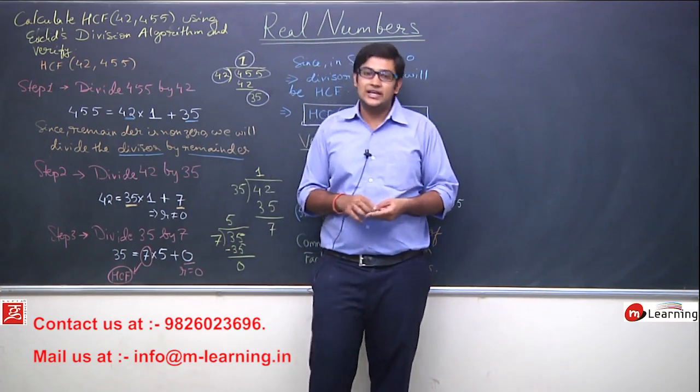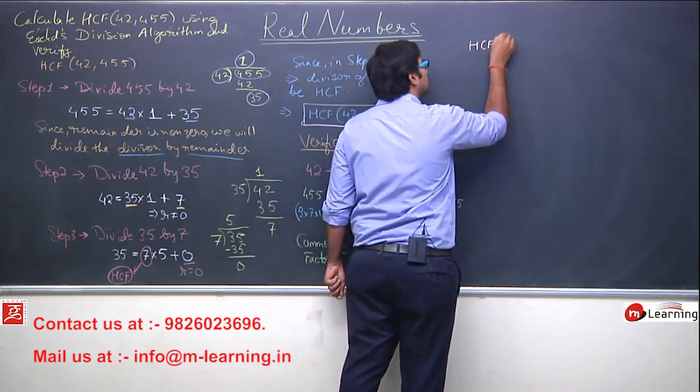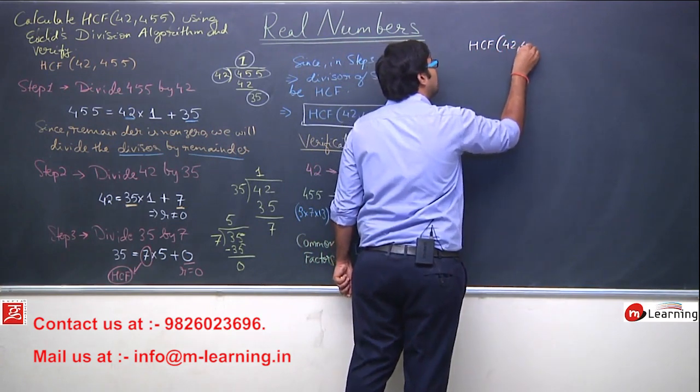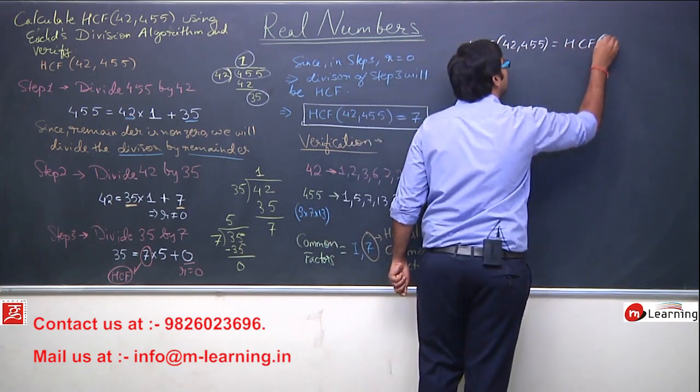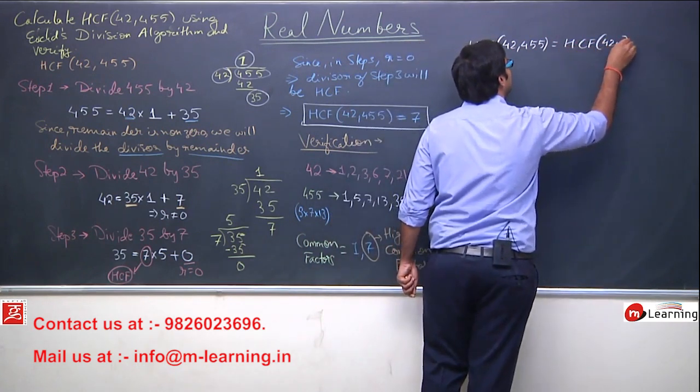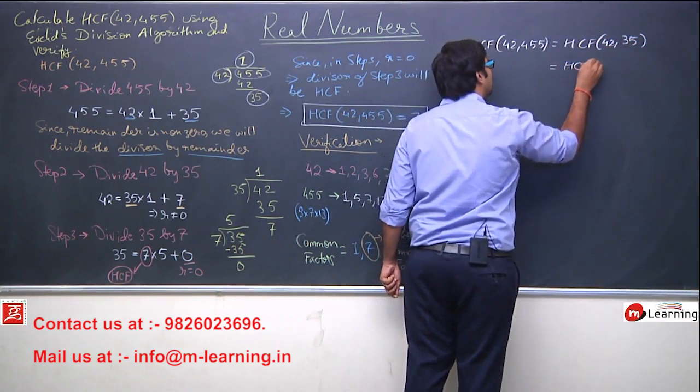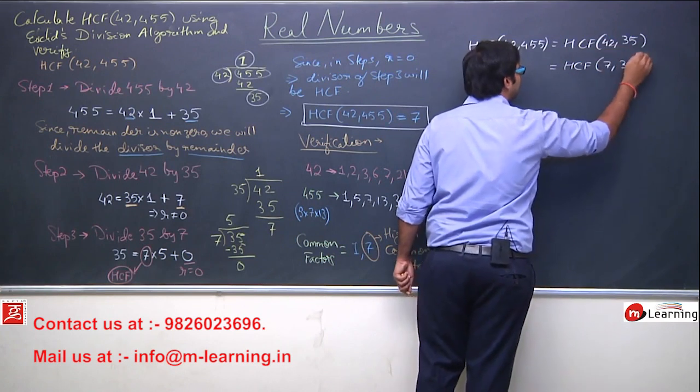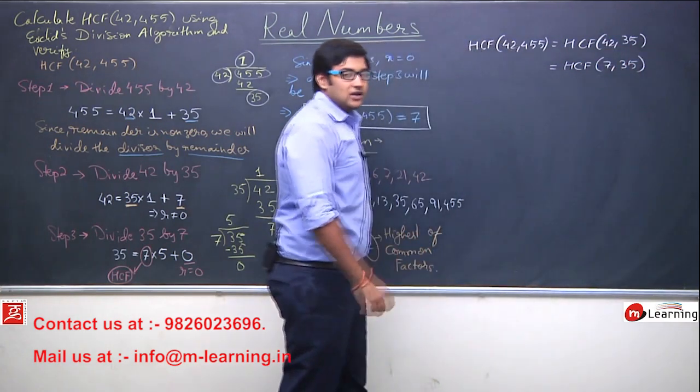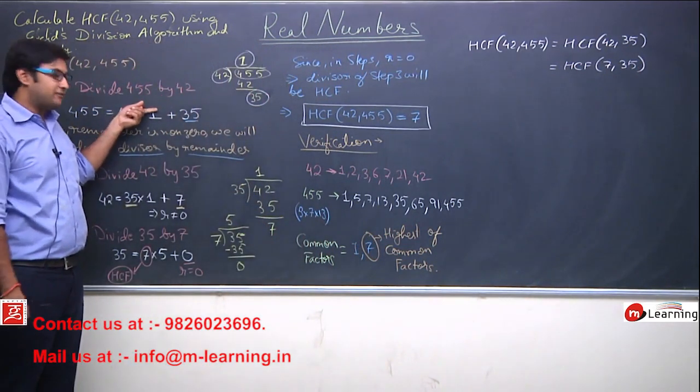Khas baat ye dekhne ko milegi ki HCF of 42 and 35 and this will again be equals to HCF of 7 and 35. Khas baat ye dekhne ko milegi ki is step me jin numbers ko divide karo unka HCF,